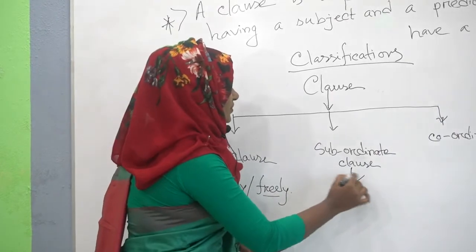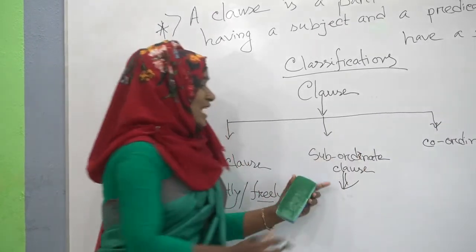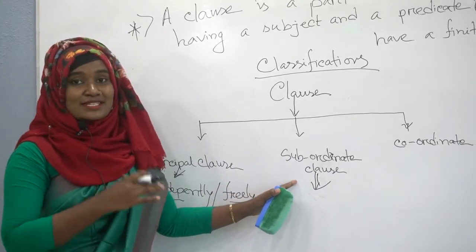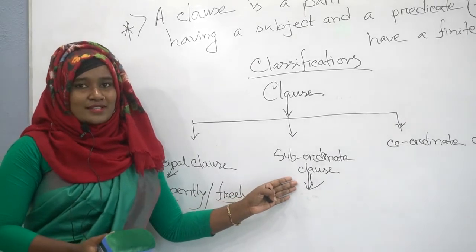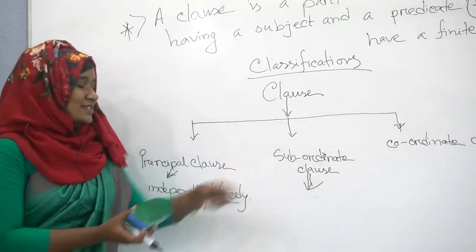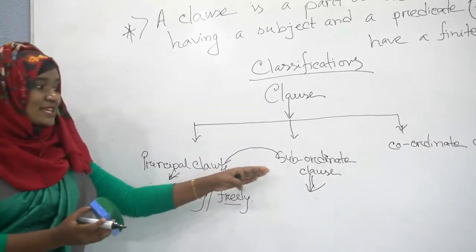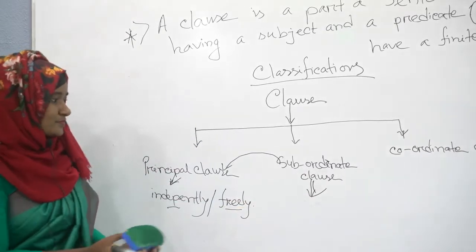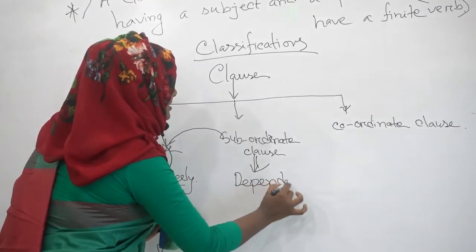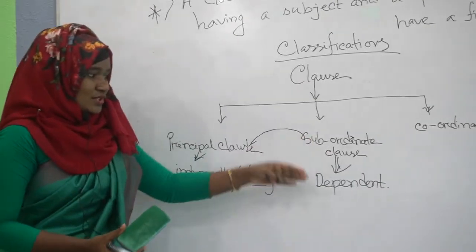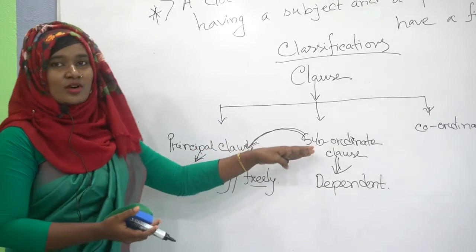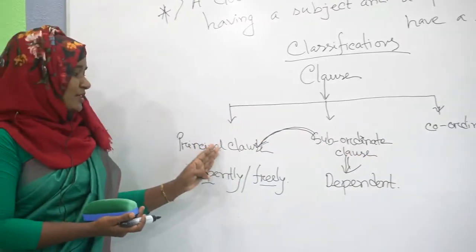Now, Subordinate Clauses. The other name of Subordinate Clause is Dependent Clause — dependent means rely on, depends. The clause that is dependent on the Principal Clause in expressing its meaning is called a Subordinate Clause. Subordinate Clauses need to depend on Principal Clauses to express their meaning clearly.